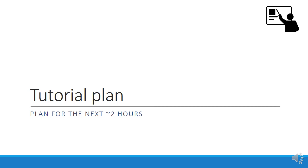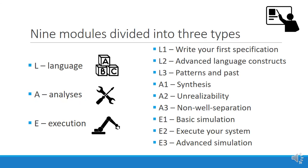Here's the plan for the next two hours or so. We have pre-recorded nine short modules, divided into three types: language, analysis, and execution. Each module is about 10 minutes long and ends with a short suggested exercise. After each module, we will give you two or three minutes to try out the exercise. This would also be a good time for us to answer questions that you can ask on the Zoom chat. After two or three minutes, we will show the exercise solution, answer questions if any, and then move to the next module.